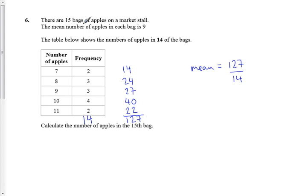However, we're told for 15 bags that the mean answer is actually 9. So if you did 127 by 14, you actually get 9.07 something something something if you do it in your calculator. It's actually a recurring decimal.